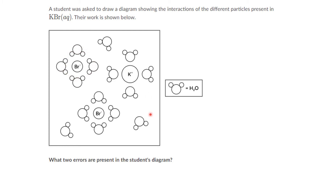What is the error here? First, you need to check whether the ratio of potassium to bromide ions is correct. In the diagram, one potassium ion and two bromide ions are shown, but in KBr the ratio between potassium ion and bromide ion is 1:1. So the first error is that the ratio between potassium and bromide ions is incorrect.